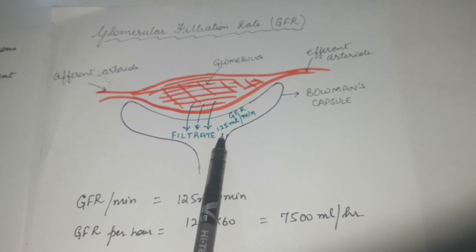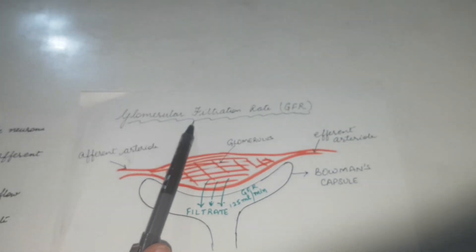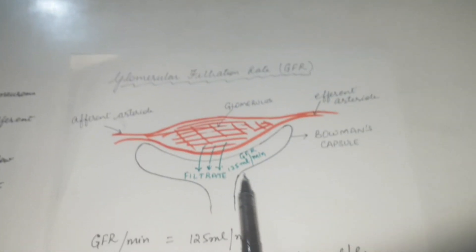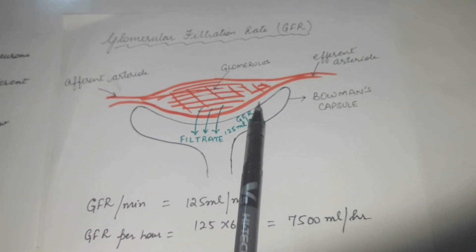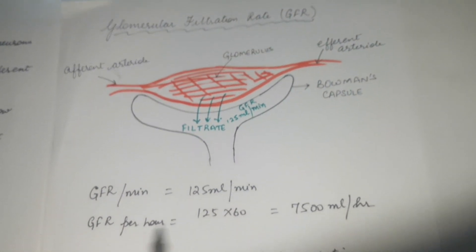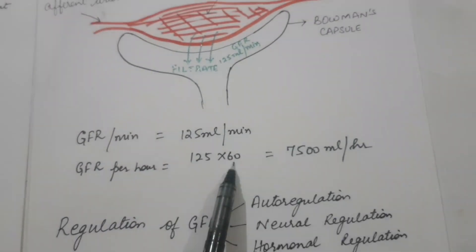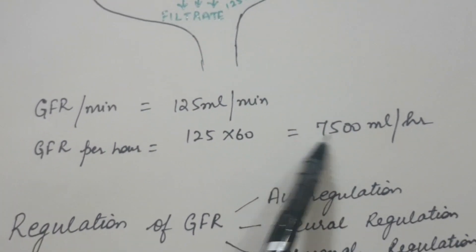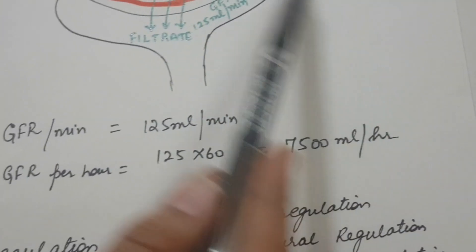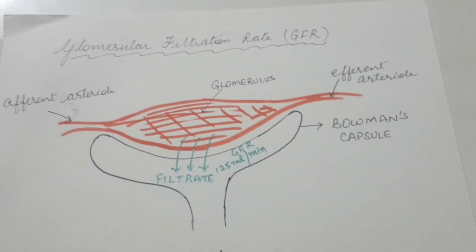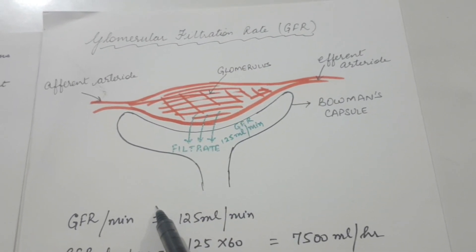In one minute we use the term glomerular filtration rate, which is 125 ml per minute. If we want to see it per hour, we will multiply it by 60, which comes out to be 7500 ml per hour. Now we will discuss all this regulation — how is this regulated, how is this controlled.